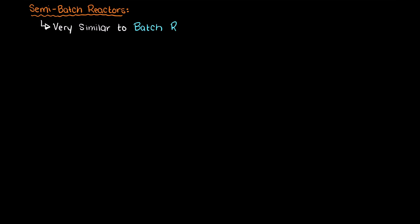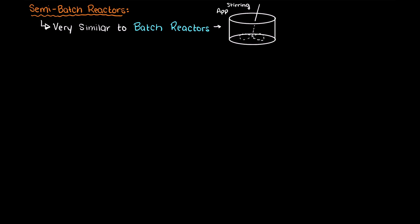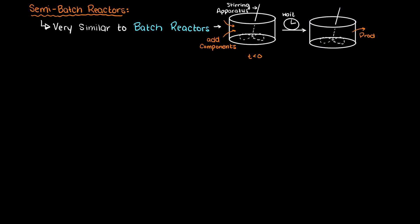Semi-batch reactors are very similar in theory to batch reactors, which we covered in the previous video. They are just a tank, often with a stirring apparatus in the middle to ensure that the liquid inside the tank stays well mixed. In a batch reactor, we put in some initial components, such as reactants or catalysts, then let the reactor run for some amount of time, and after that time we remove our reacted products. In this system, there is no addition or removal of material inside the reactor during its run.